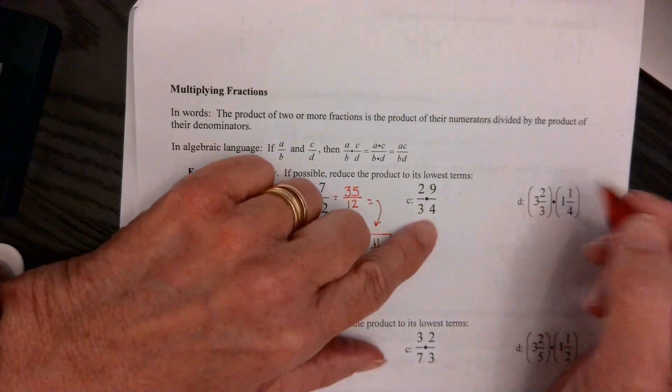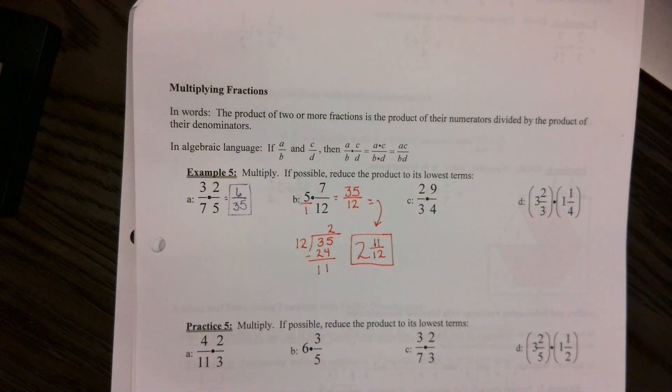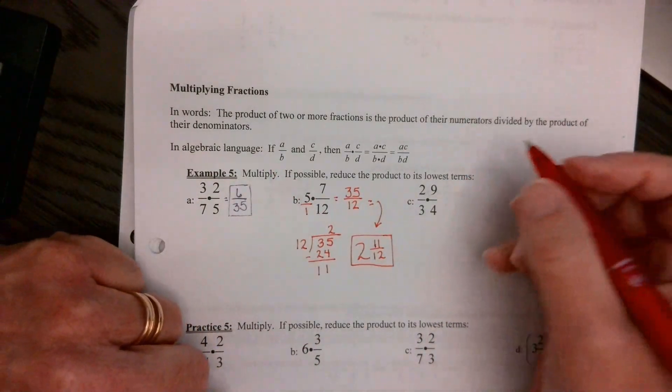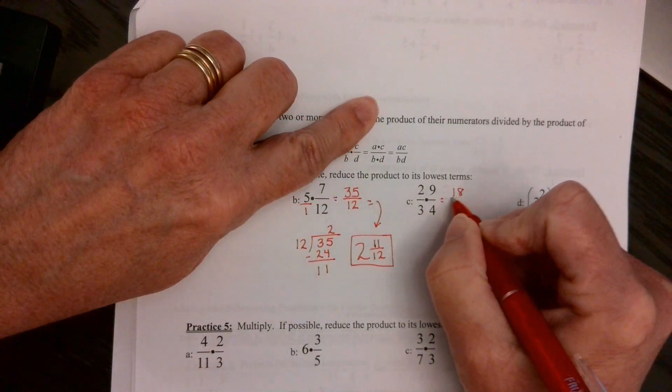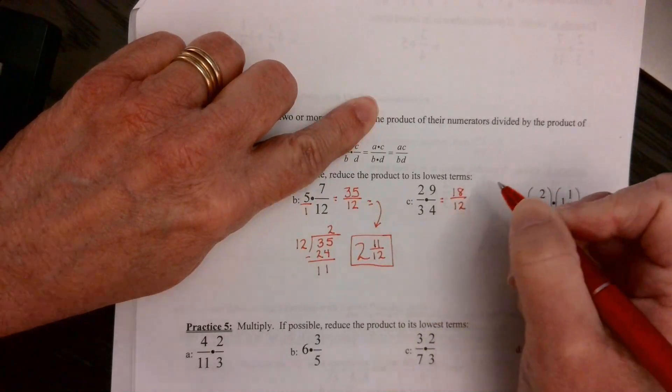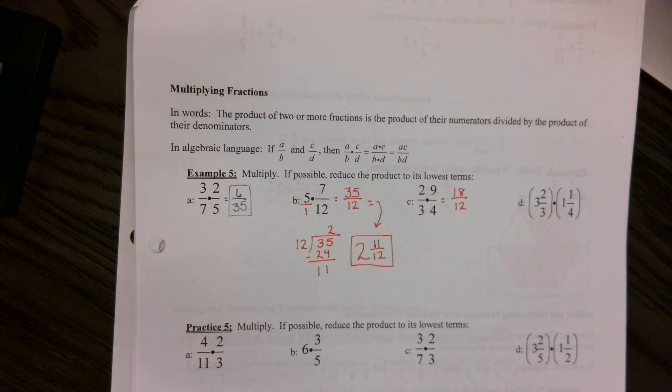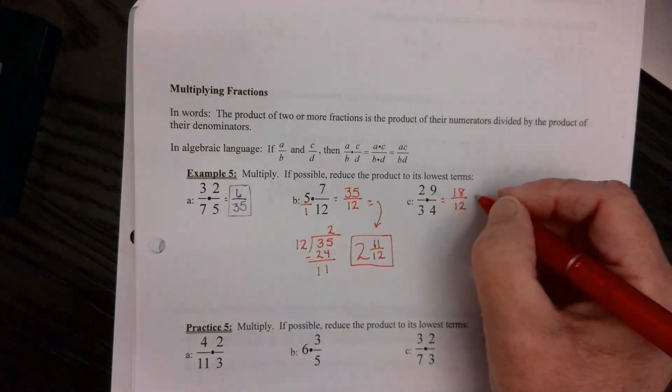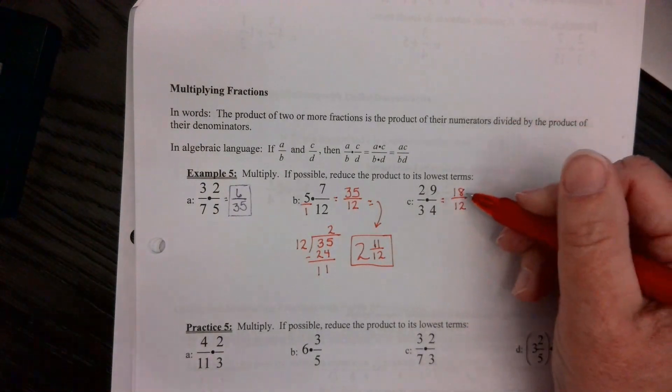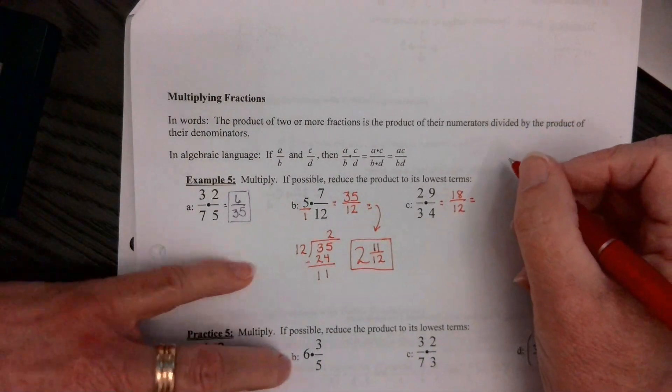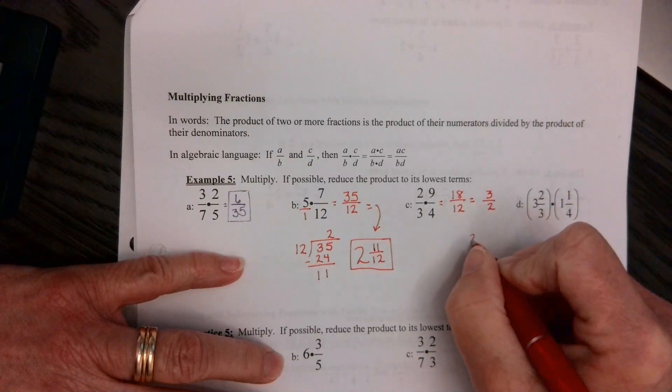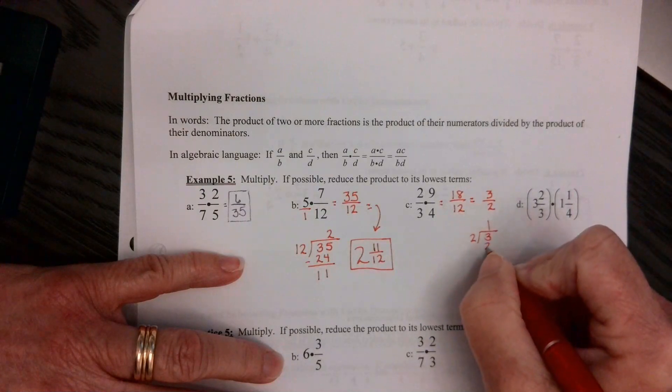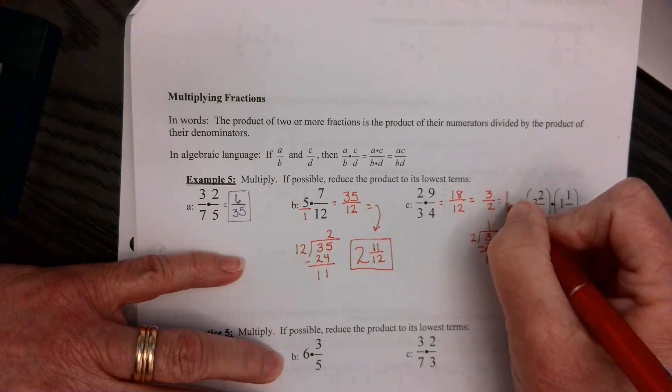Okay. Right here. Now this problem, I will do this differently than you guys, probably. But this is how you will probably, most likely, do it. You'll say 2 times 9 is 18. 3 times 4 is 12. Now, you can reduce this and then change it to a mixed numeral, or you can do a mixed numeral and then reduce. I don't really care. It doesn't matter. If you went ahead and reduced it and said, okay, the biggest number that goes into 18 that goes into 12 is 6, and you'll get 3 over 2, then you'll get 2 goes into 3 one time. 1 times 2 is 2, so you get 1 and 1/2.